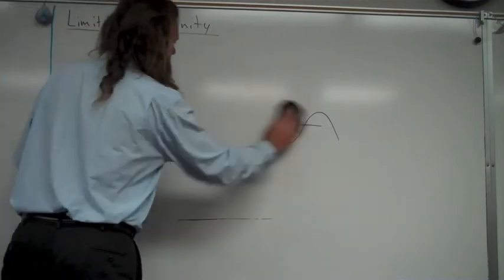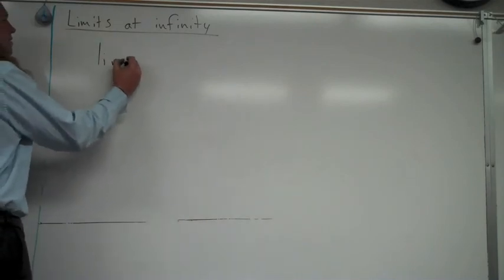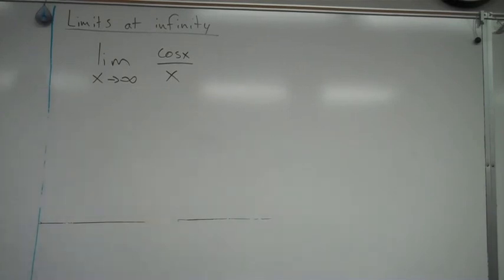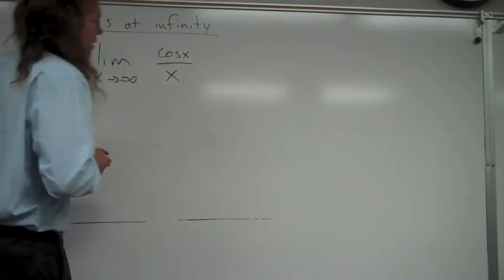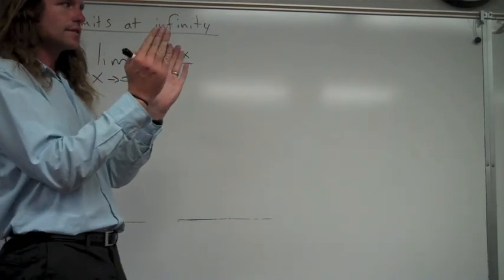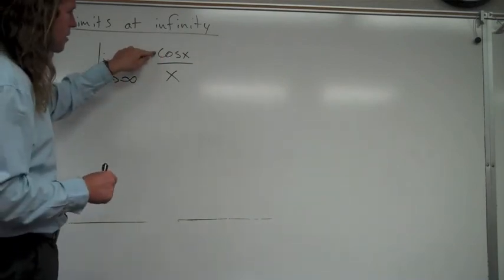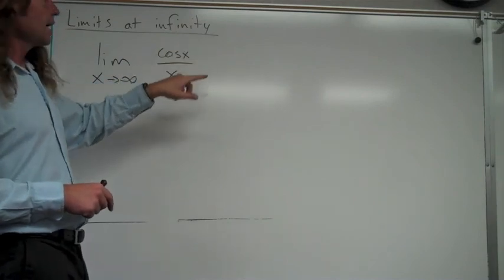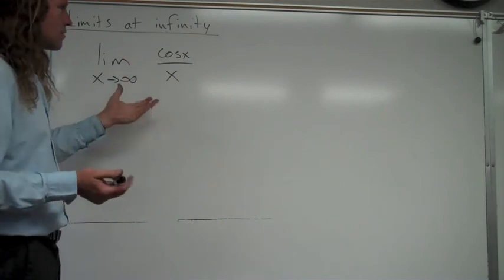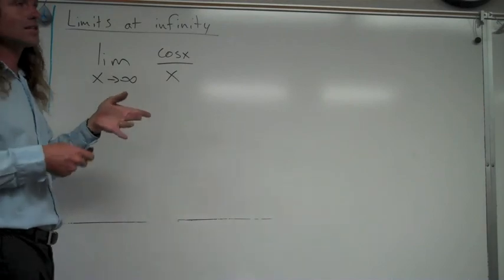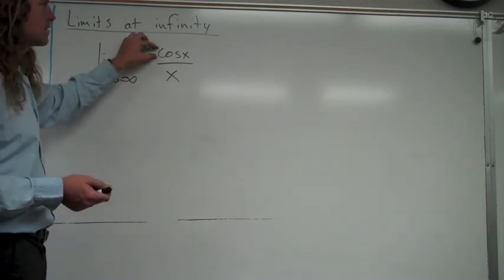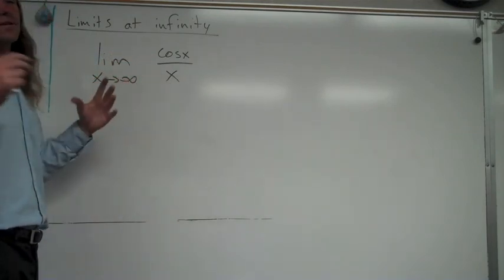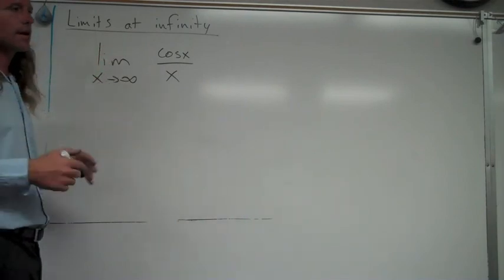One more trig limit: the limit as x approaches infinity of cosine x over x. Cosine x oscillates between negative one and one — that's the range it stays in. But the bottom, x, is going to get huge. You have something on top oscillating between negative one and one, and the bottom is gigantic. It's similar to the 1 over x case — something very small on top over a huge number on the bottom. So this limit will just be zero.